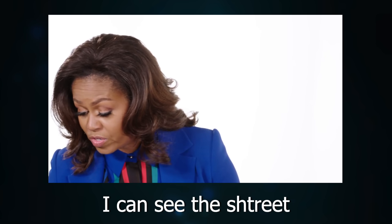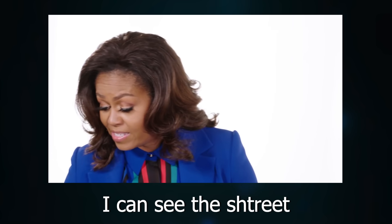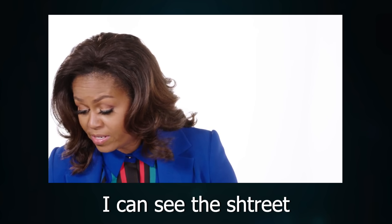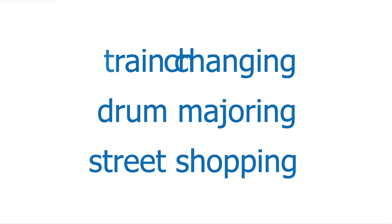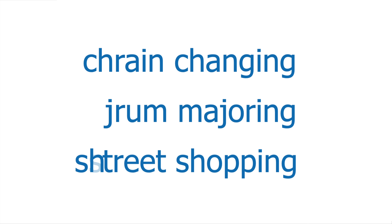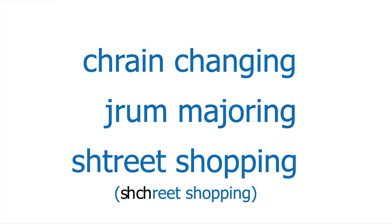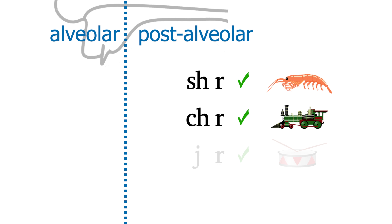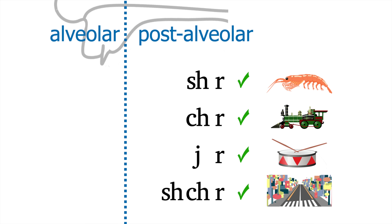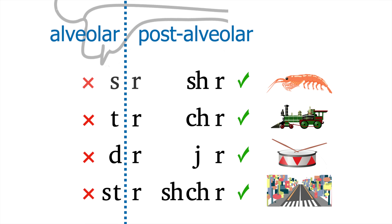What would be really scientifically elegant is if speakers could make that one completely post-alveolar too. And then we start driving and I can see the street — the pavement passing. I can see the street. I'm going to call this one 'street shopping.' Speakers like Michelle Obama have a complete set: train changing, drum majoring, and street shopping. Shrimp, train, drum, street. They've eliminated TR, DR, and STR in the same way that none of us has SR.